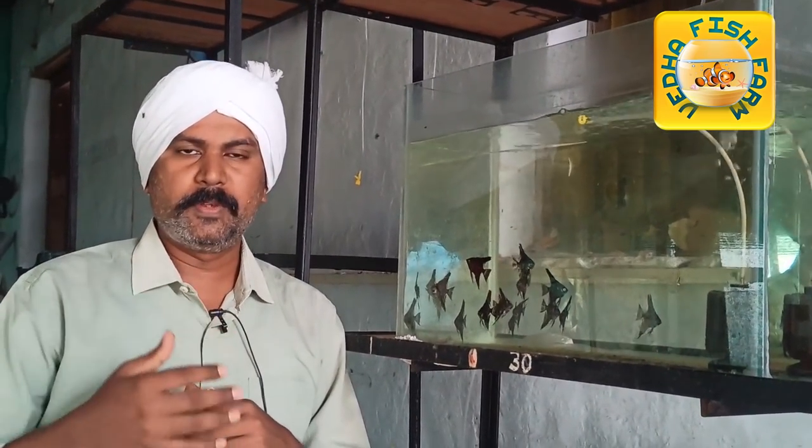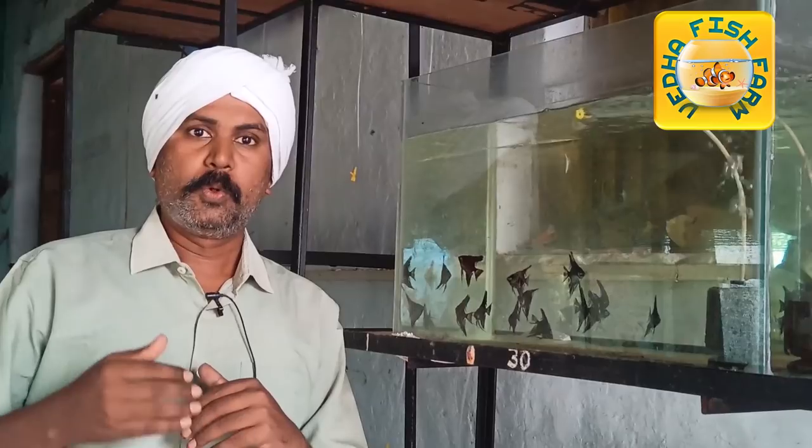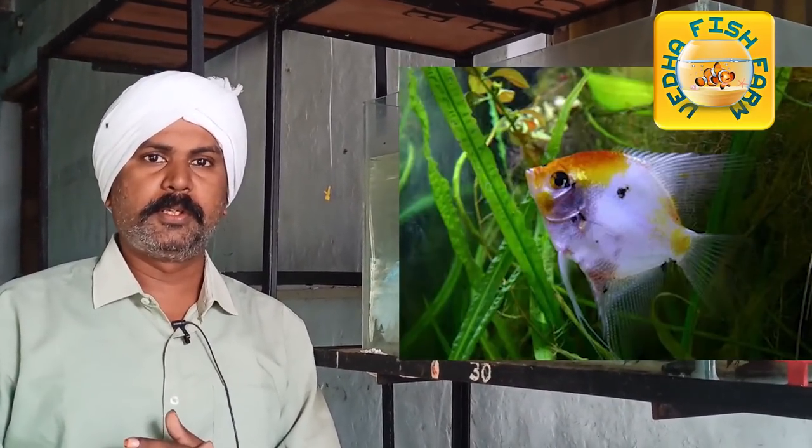Look at the angelfish varieties. There is the Blushing Angel — if you look at the color in the photo, you can see a rose color. There is the White Angel, the Mosaic Angel. There are some interesting and fancy varieties: Blue Angel and Koi Angel.